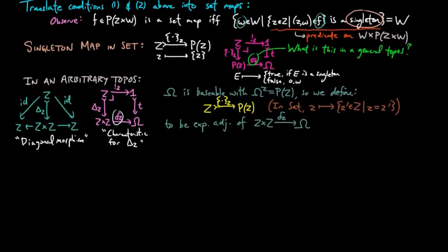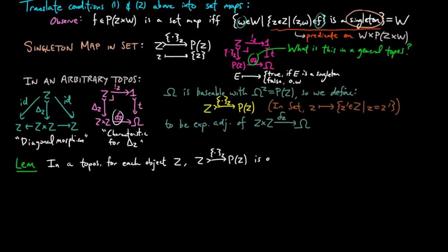We still need to show this singleton morphism is a monomorphism in a general topos. We have the following lemma: in a topos, for each object z, the singleton morphism on z is a monomorphism.